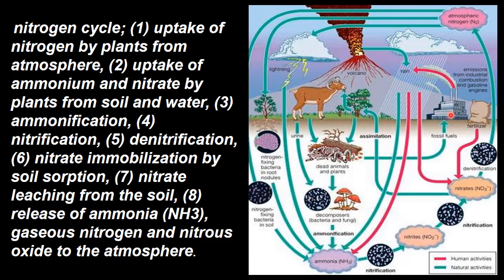In the industrial area, the atmosphere feeds into the soil, then the plants to the animals. Animal proteins, amino acids, and nucleic acids return to the soil. Again, nitrification — this is called the nitrogen cycle.